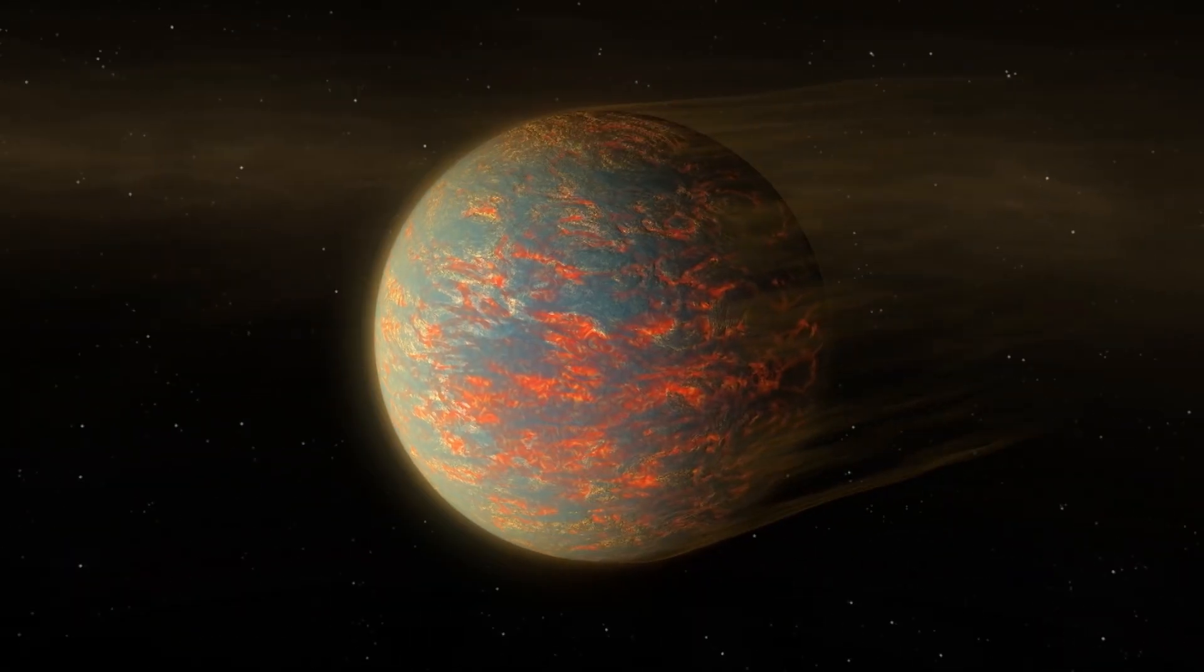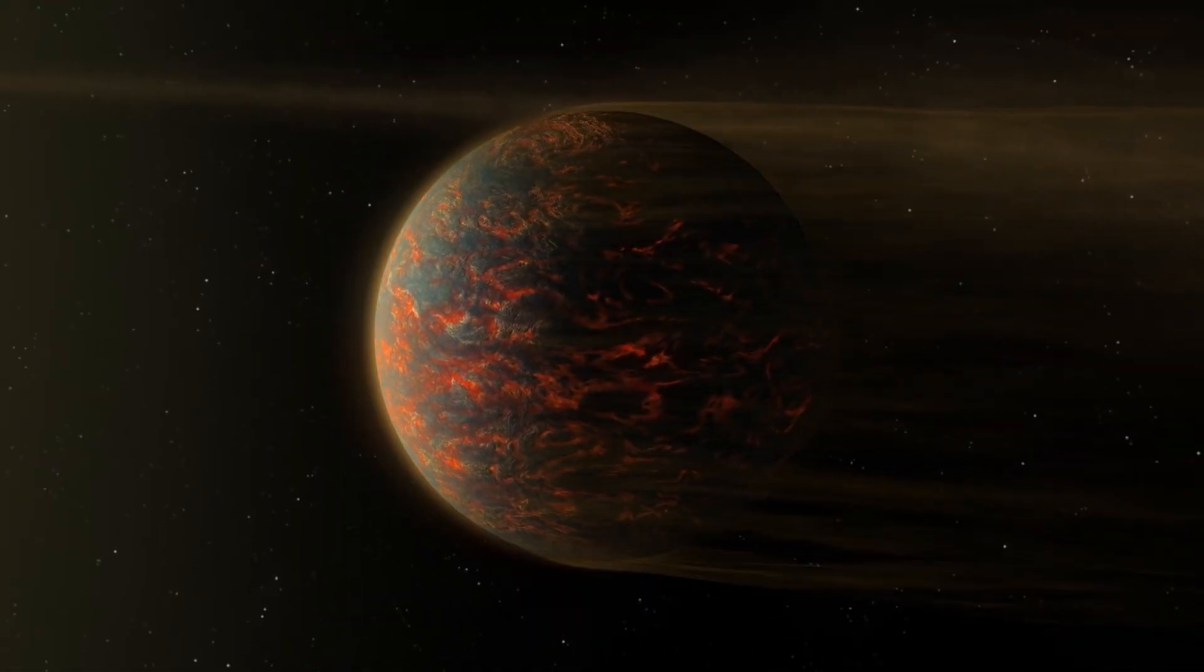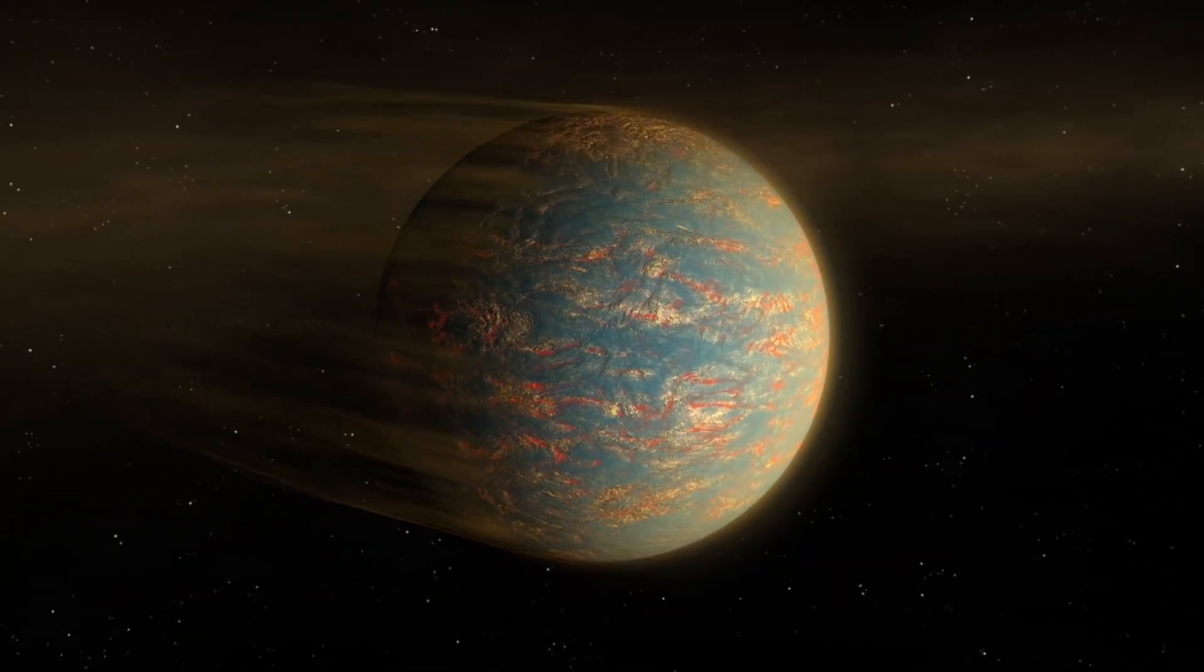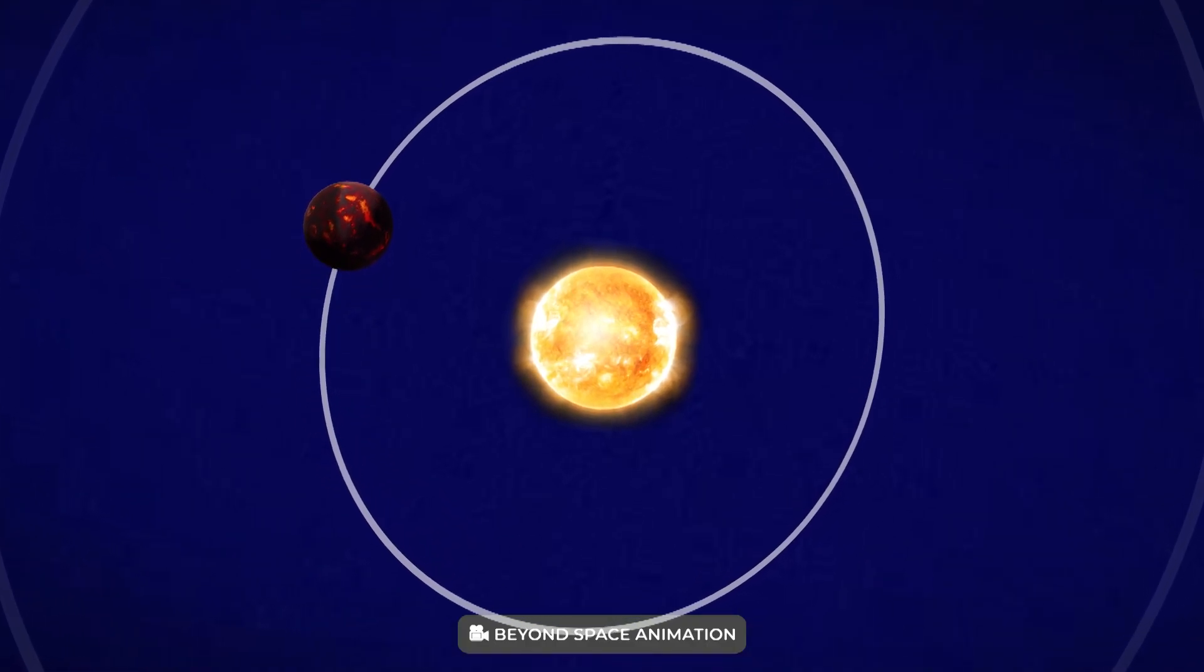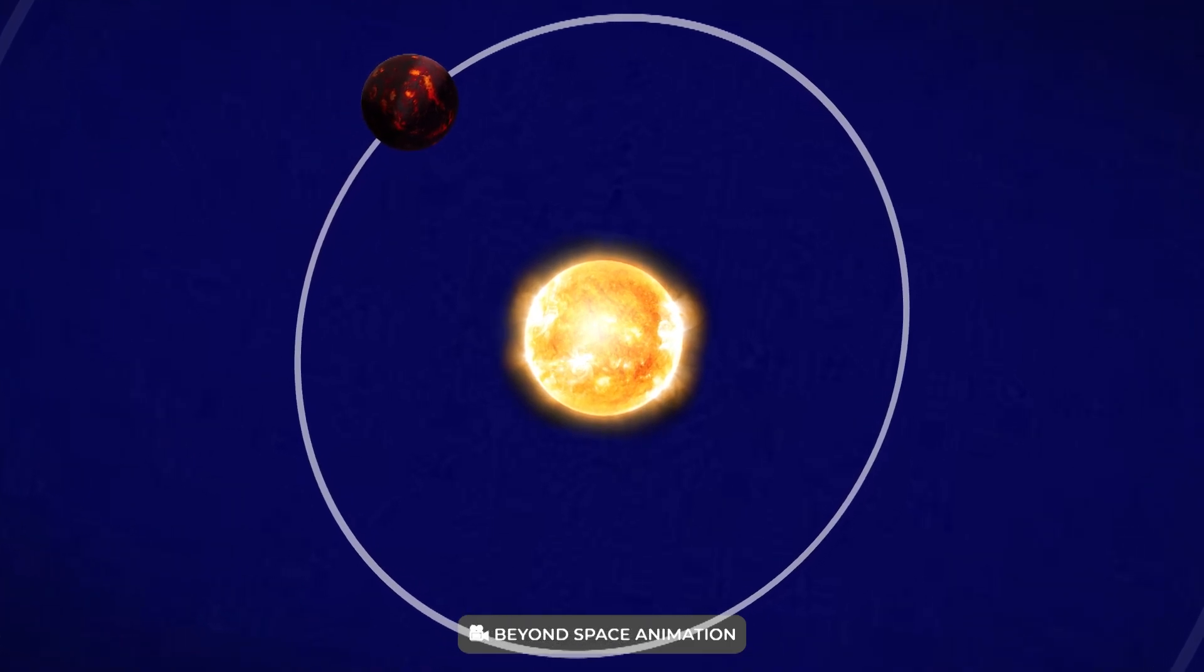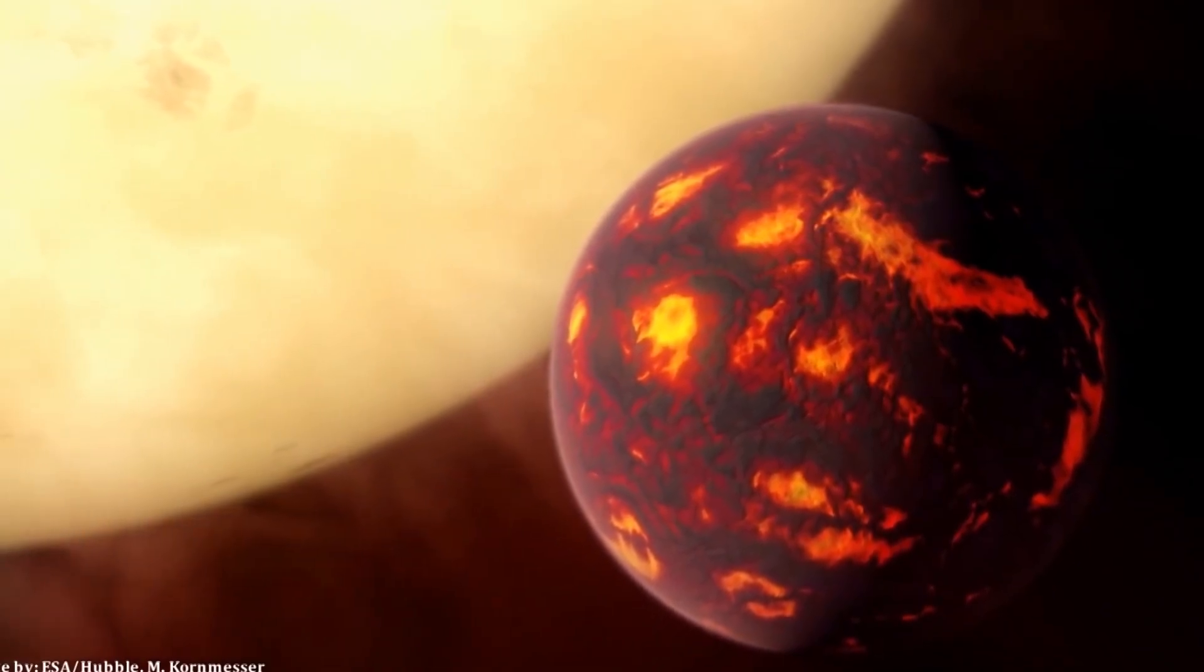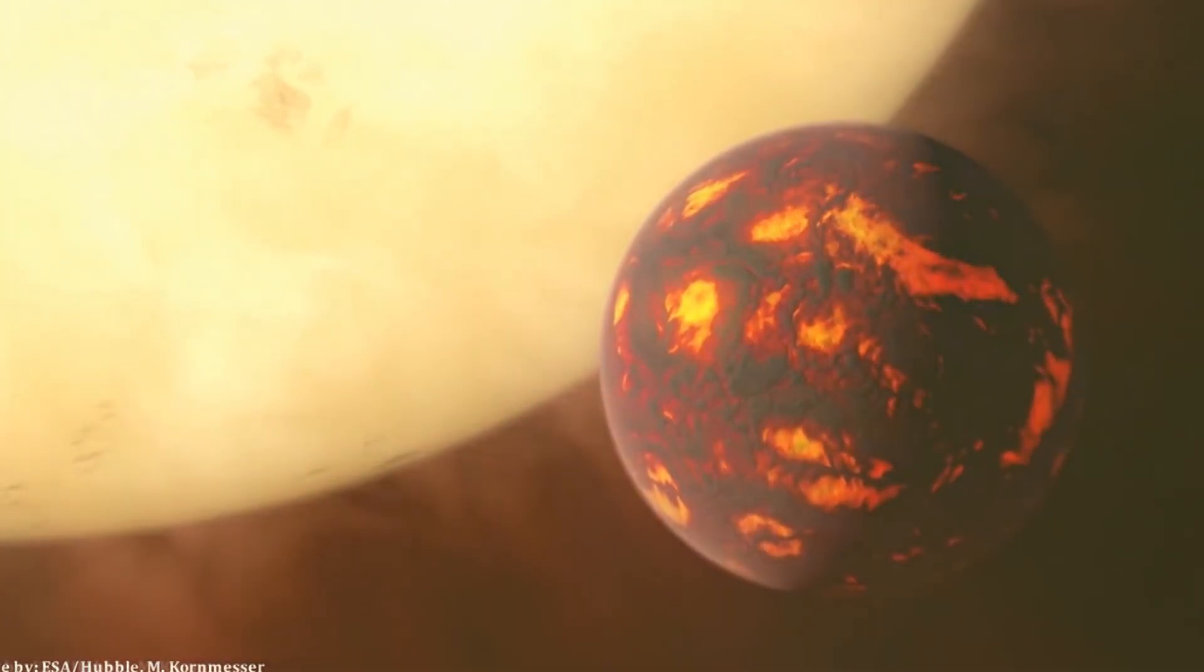With surface temperatures far above the melting point of typical rock-forming minerals, the day side of the planet is thought to be covered in oceans of lava. Planets that orbit this close to their star are assumed to be tidally locked, with one side facing the star at all times. As a result, the hottest spot on the planet should be the one that faces the star most directly and the amount of heat coming from the day side should not change much over time.